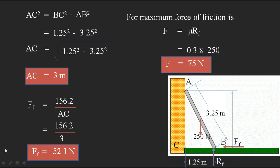Since the required frictional force of 52.1 N is less than the maximum frictional force of 75 N, the ladder remains in equilibrium. Both parts of the problem are solved: we found the frictional force and confirmed the equilibrium condition. I hope you understood the solution. Please share my videos with your friends, subscribe, and thanks for watching.